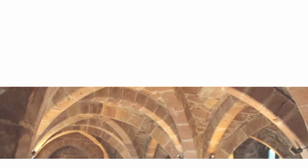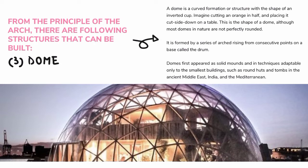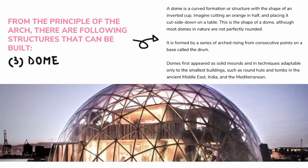Dome. A dome is a curved formation or structure with the shape of an inverted cup. Imagine cutting an orange in half and placing it cut side down on a table — this is the shape of a dome, although most domes are not perfectly rounded. It is formed by a series of arches rising from consecutive points on a base called the drum. Domes first appeared as solid mounds in techniques adaptable only to the smallest buildings, such as round huts and tombs in the ancient Middle East, India, and the Mediterranean.